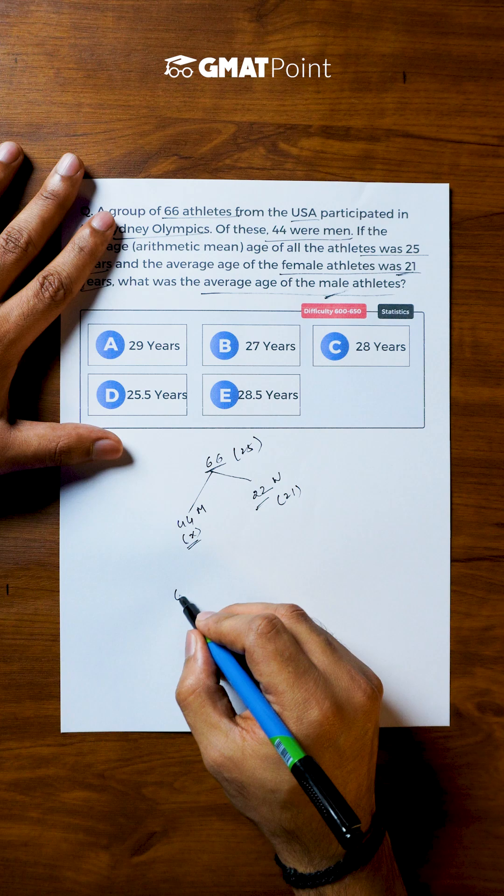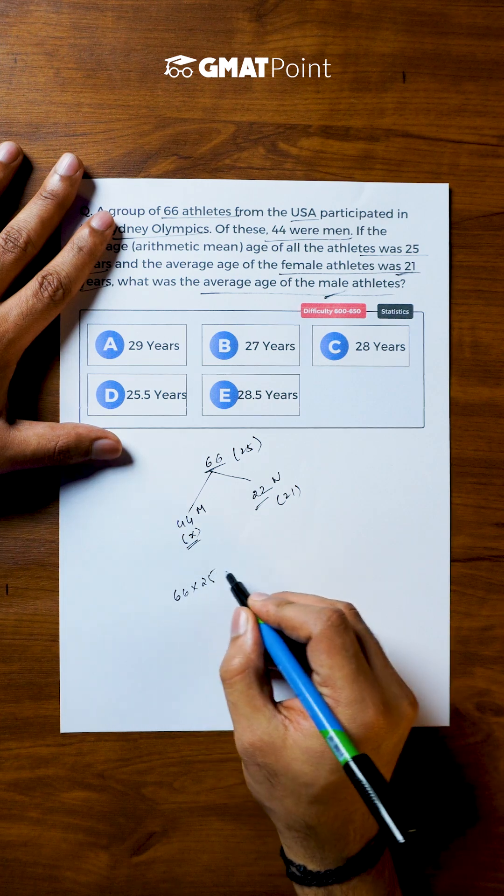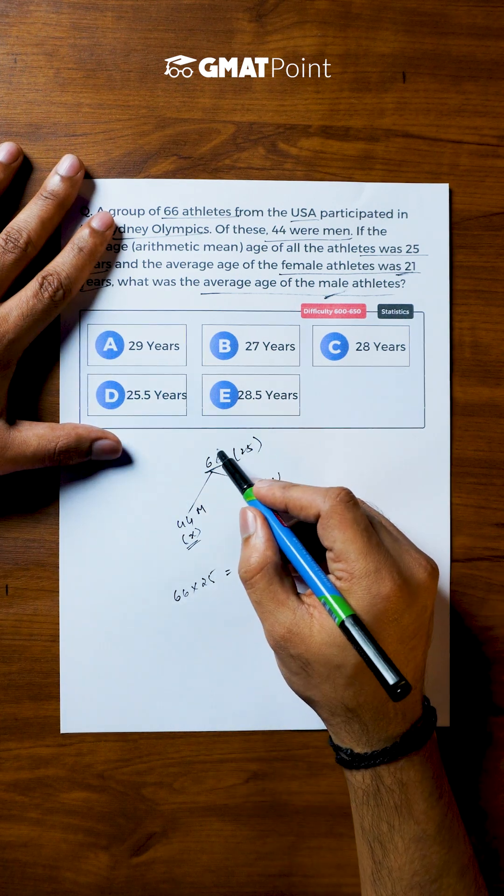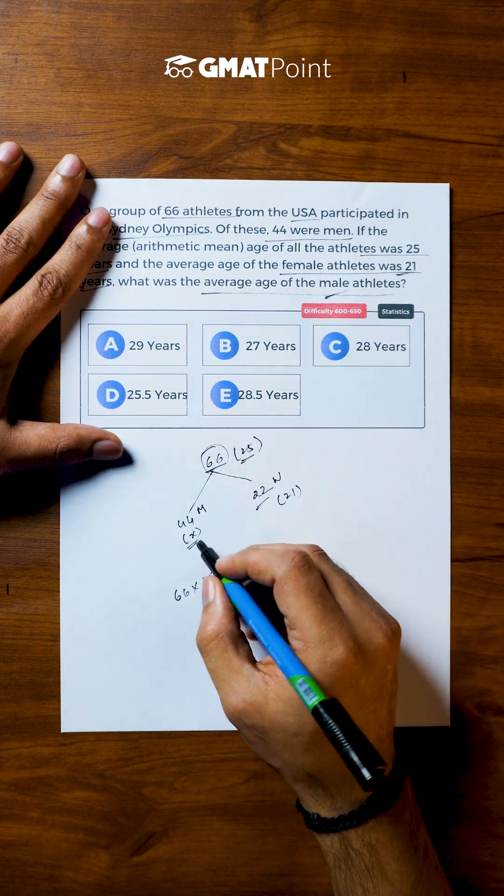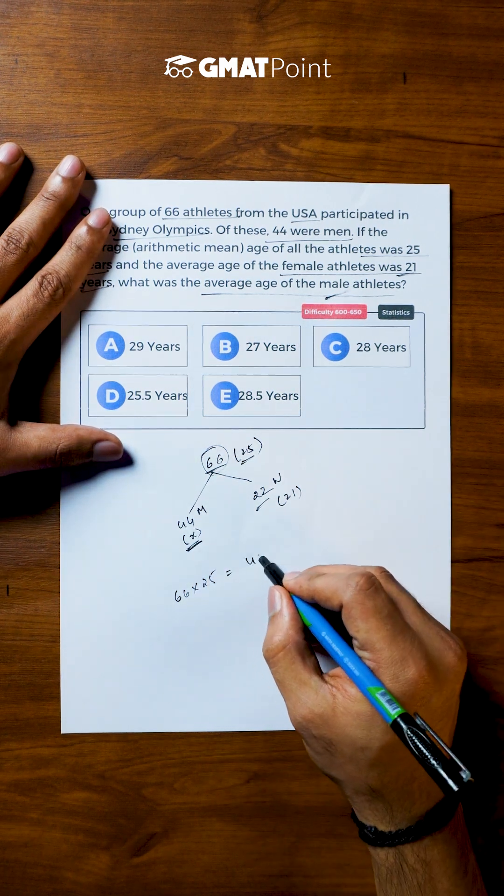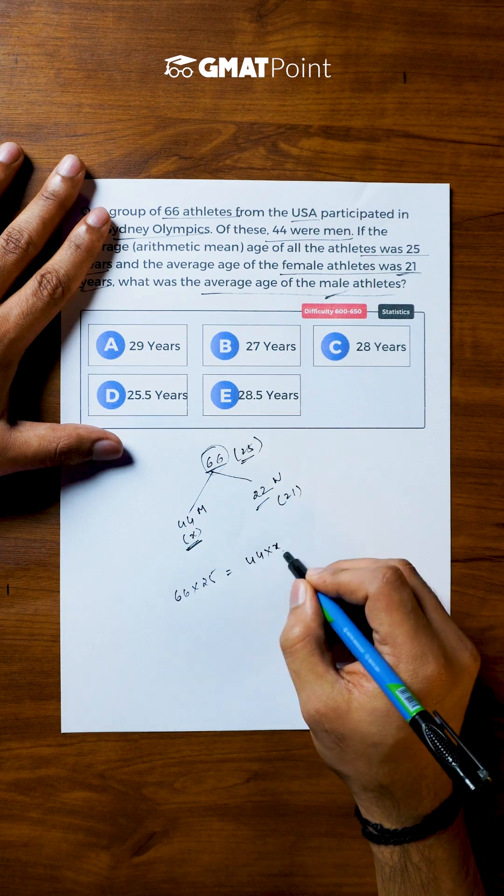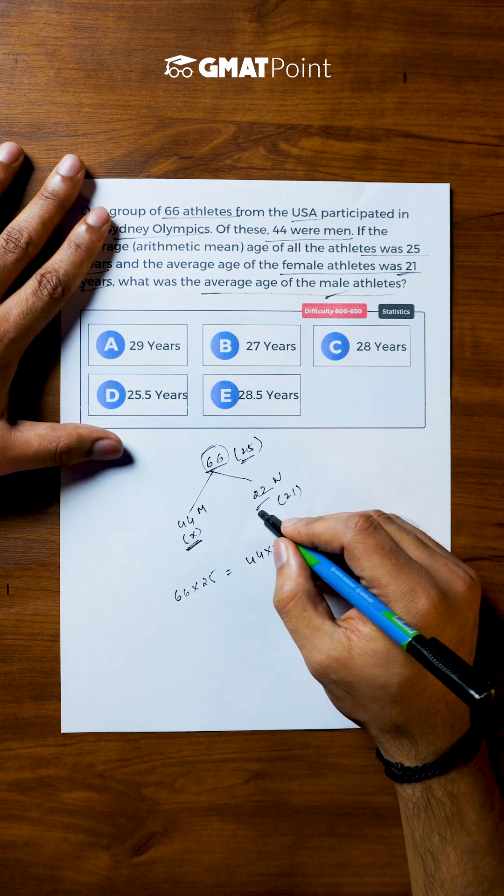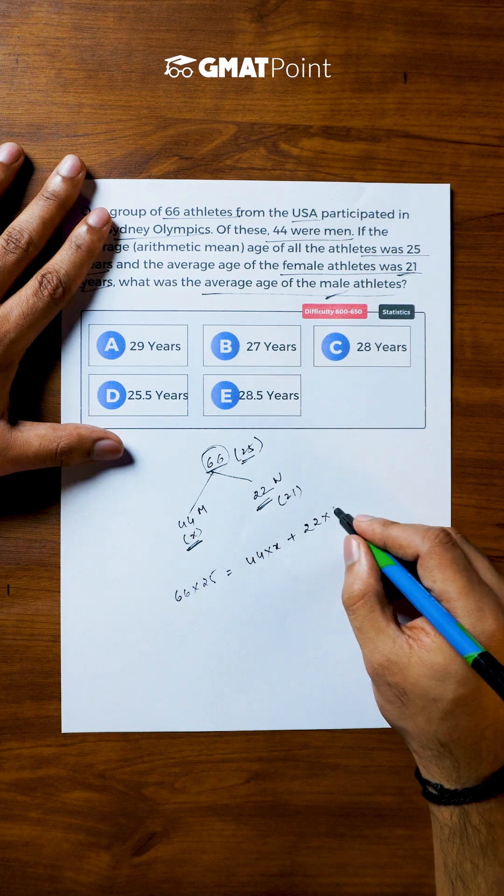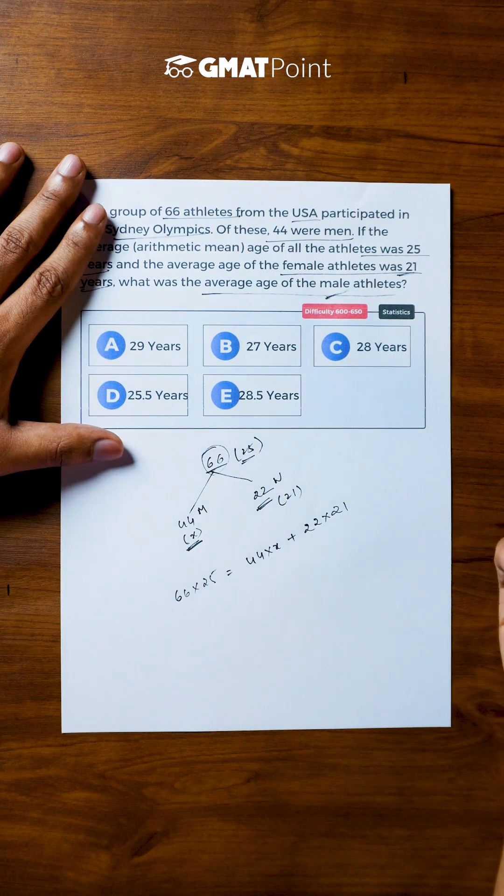Now we know that sum of ages of all athletes is equal to total number of athletes times average age of each of the athletes. This must be equal to the total sum of ages of male athletes, which would be equal to 44 into x, plus the total age of women, which would be equal to average into total number of women.